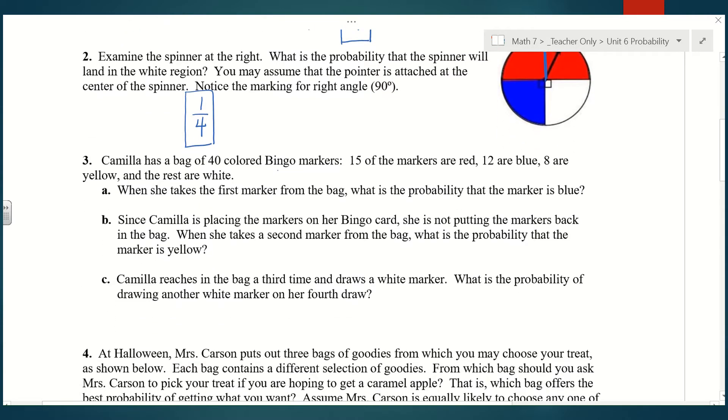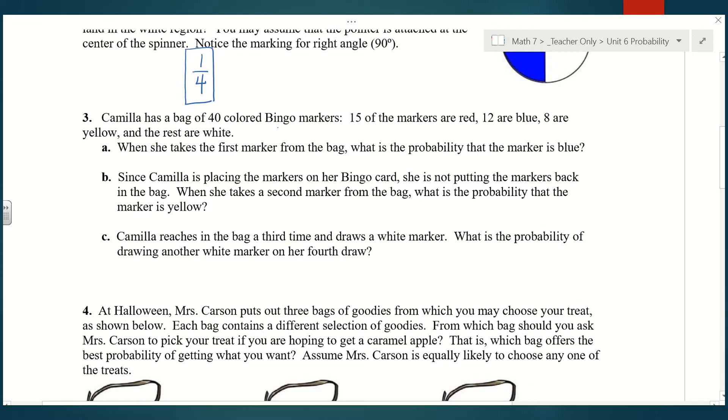Number three, Camilla has a bag of 40 colored bingo markers. 15 of the markers are red, 12 are blue, 8 are yellow, and the rest are white. When she takes the first marker from the bag, what is the probability that the marker is blue? We already know there are 40 total markers in the bag, and we need to see how many are blue. 12 out of 40 are blue. I can reduce that by 4 to give me 3/10.